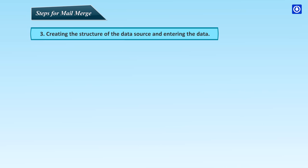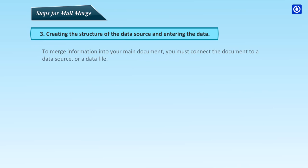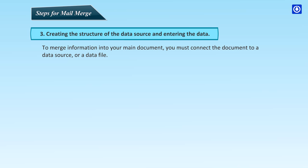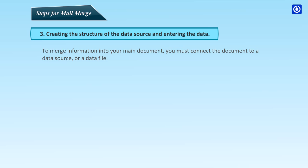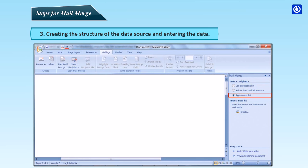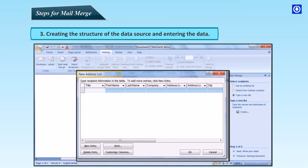Creating the structure of the data source and entering the data: to merge information into your main document, you must connect the document to a data source or a data file. Choose the 'Type a new list' option and click the Create button. The New Address List dialog box appears. This is where you type the information for the first address or record you want to include in your merge. To customize the address list as per your needs, click the Customize Columns button.